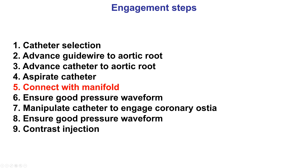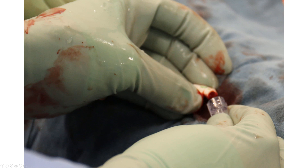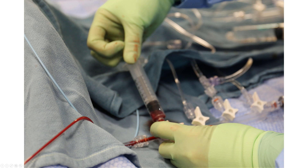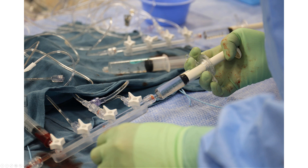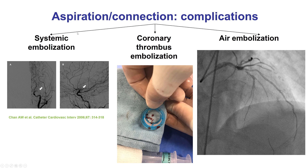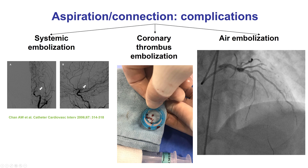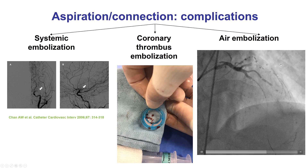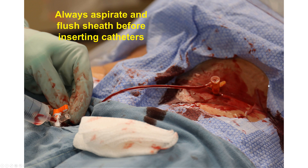Step number five is to connect the catheter with the manifold. This is usually done in a fluid-to-fluid connection, followed by aspiration to ensure there is no air or debris in the line. Typically, the preparation is done with the catheter and manifold tilted up, so any air or other material goes to the top of the syringe and is not injected into the coronary arteries or bypass grafts. Vertical orientation of the manifold is important. One syringe is used to aspirate the sheath, then that syringe and blood are discarded, and a separate syringe with clear normal saline is used to flush the catheter.